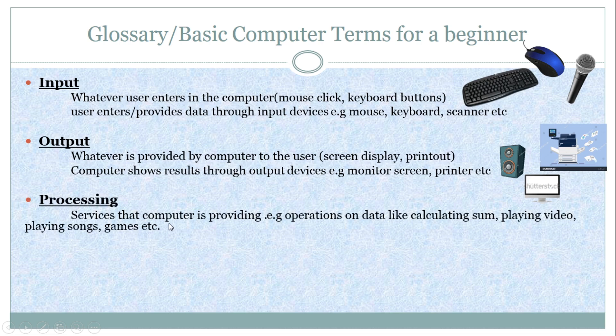The next term is processing. The services that the computer is providing, for example, operations on data like calculating sums, using paint software, playing videos, etc. These are all the services that computer is offering you using its brain, that is the system unit. And these services are known as the processing of a computer.